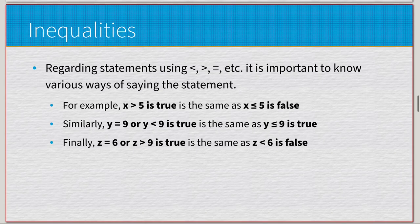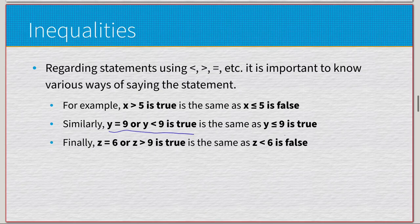Since we have all these definitions, we can use logical equivalency to rearrange how things are stated with inequalities. For example, 'x > 5 is true' is the same as saying 'x ≤ 5 is false.' Similarly, 'y = 9 or y < 9 is true' gives birth to the symbol ≤ as a single operation. And 'z = 6 or z > 9' lets us determine 'z < 6 is false' based on this definition.